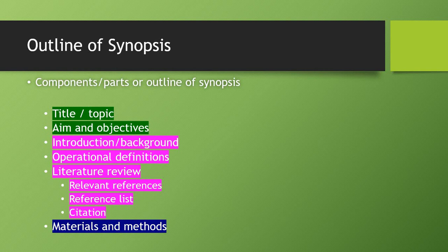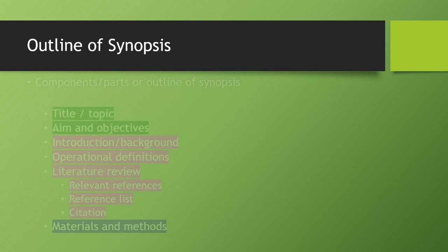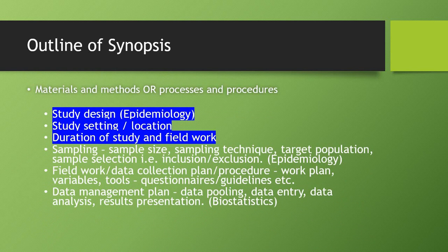We also covered some operational definitions of the disease or condition under study. Then we discussed literature review in very detail — how to include relevant references, how to draw a reference list in Vancouver style of referencing, and how to write citations in your text. Today we are going to do materials and methods, which is also known as processes and procedures.